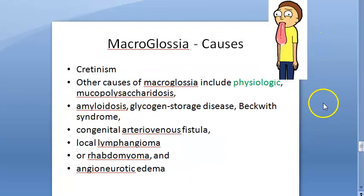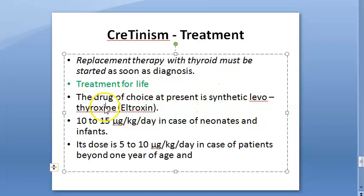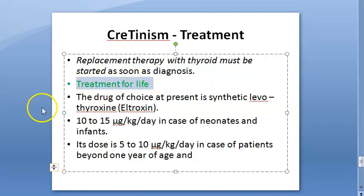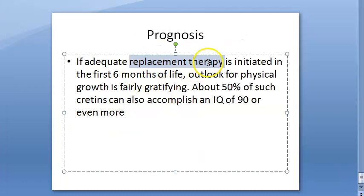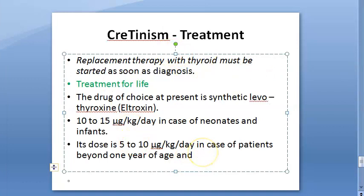Treatment is to give synthetic levothyroxine (Eltroxin). For neonates and infants, the dose is 10 to 15 micrograms per kg per day; after one year of age, it is 5 to 10 micrograms per kg per day. Treatment should begin as soon as diagnosis is made and is for life. Prognosis is very good if replacement therapy is started within the first six months of life.